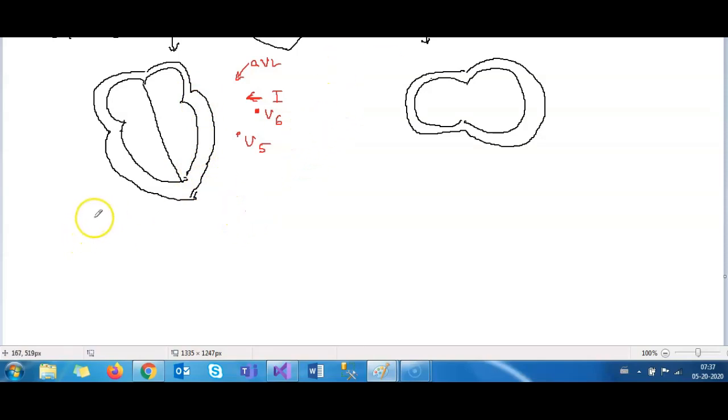Similarly, we have leads which are looking at the inferior surface of the heart. These are what we usually call the inferior leads. Primarily, they consist of lead 2, lead 3, and AVF. So, we have leads looking at the lateral surface and the inferior surface, and to recall, we also have leads looking at the septum V1, V2, and looking at the anterior surface of the left ventricle that's V3 and V4.